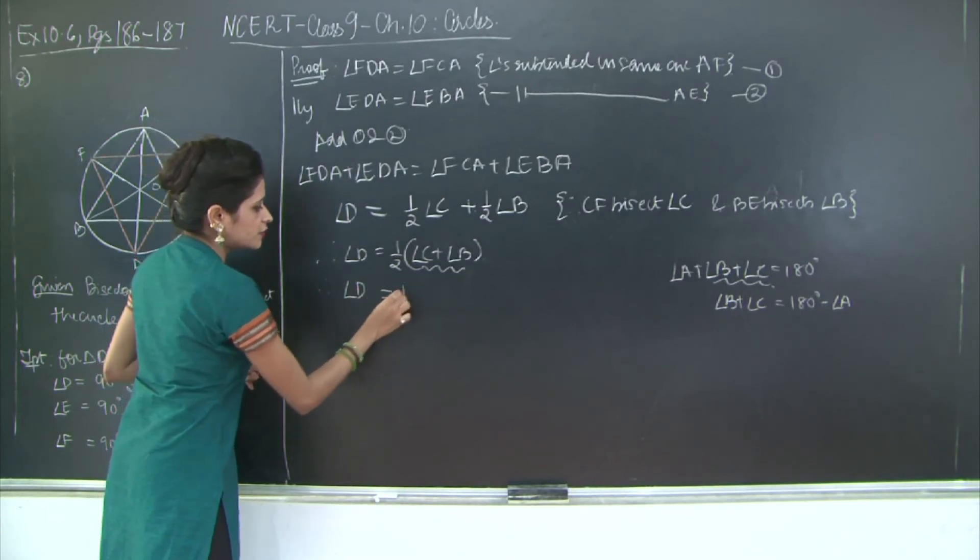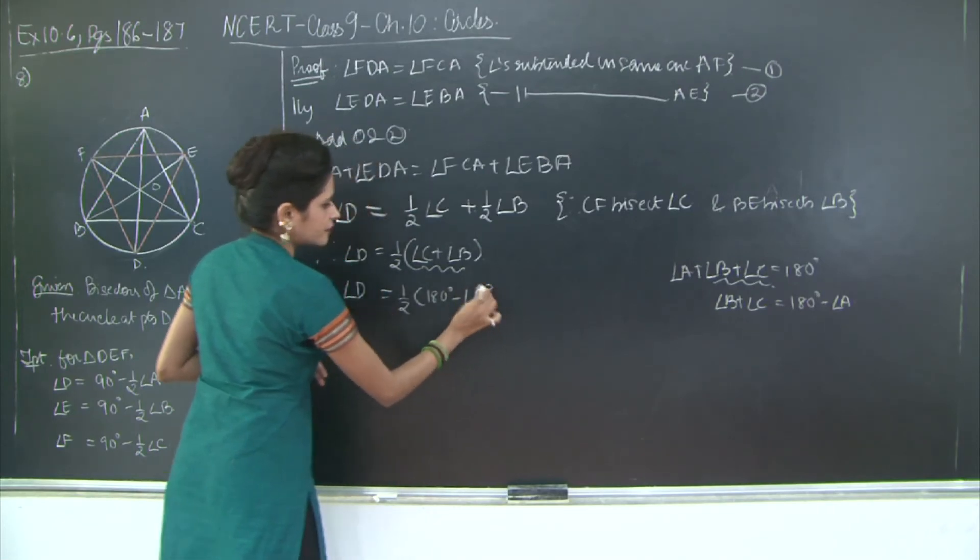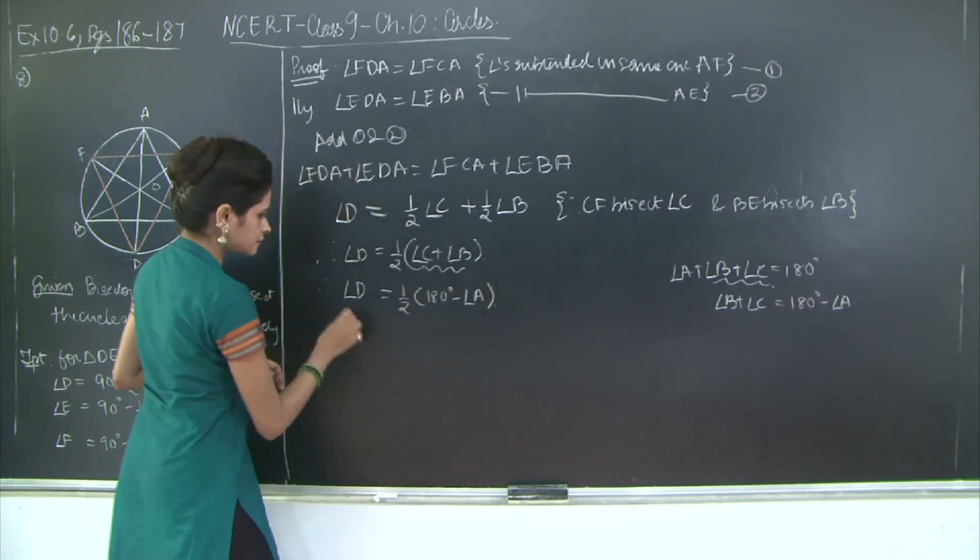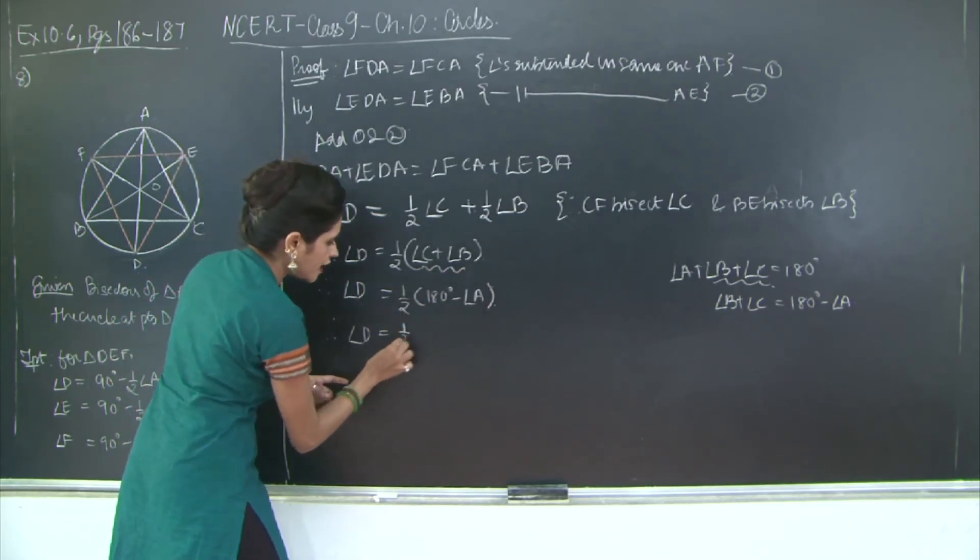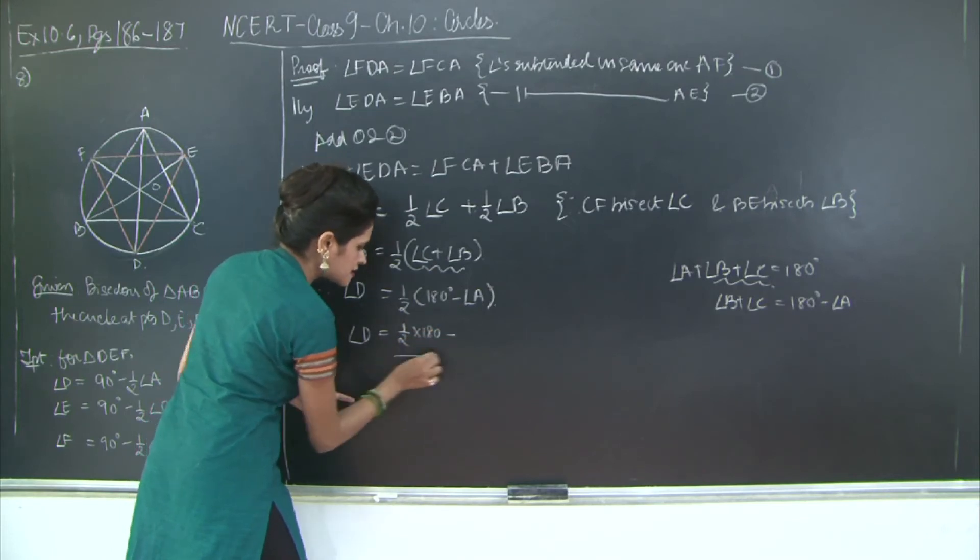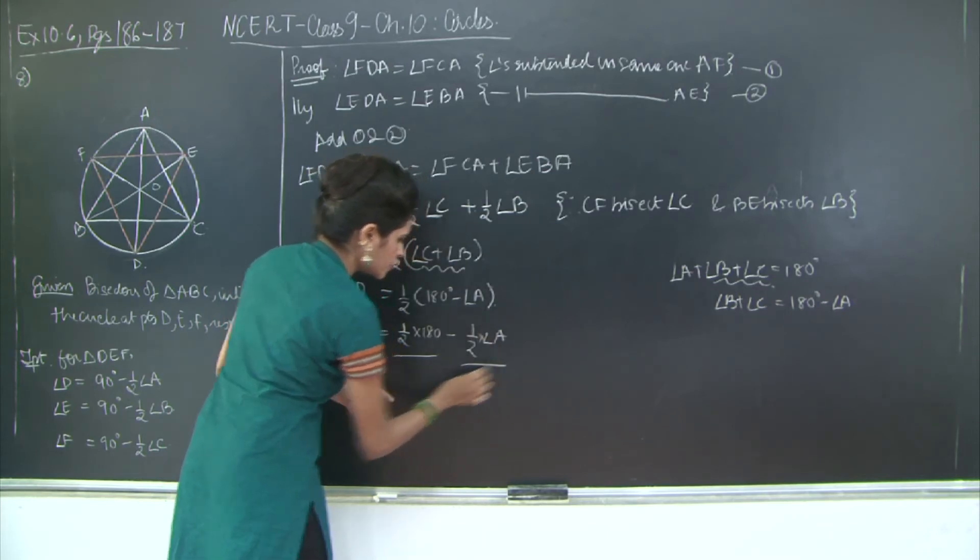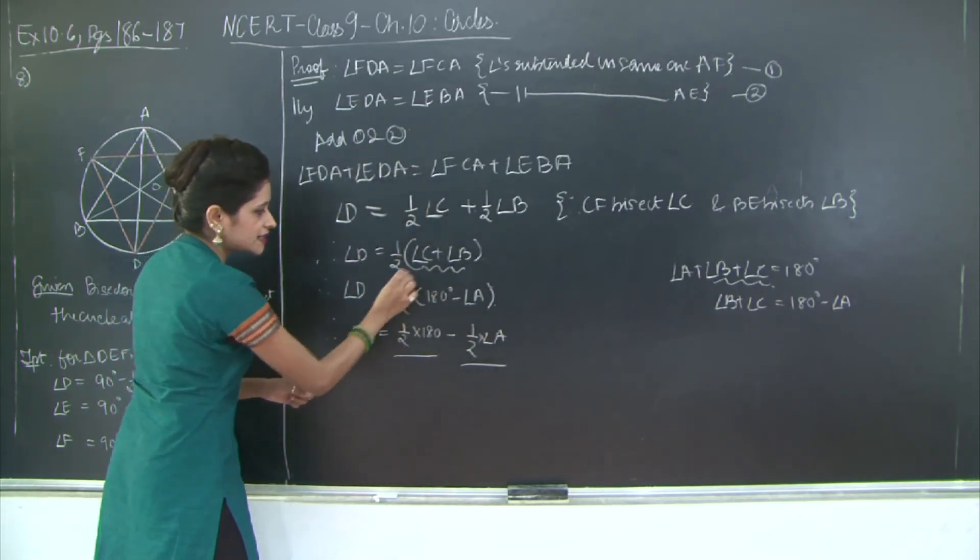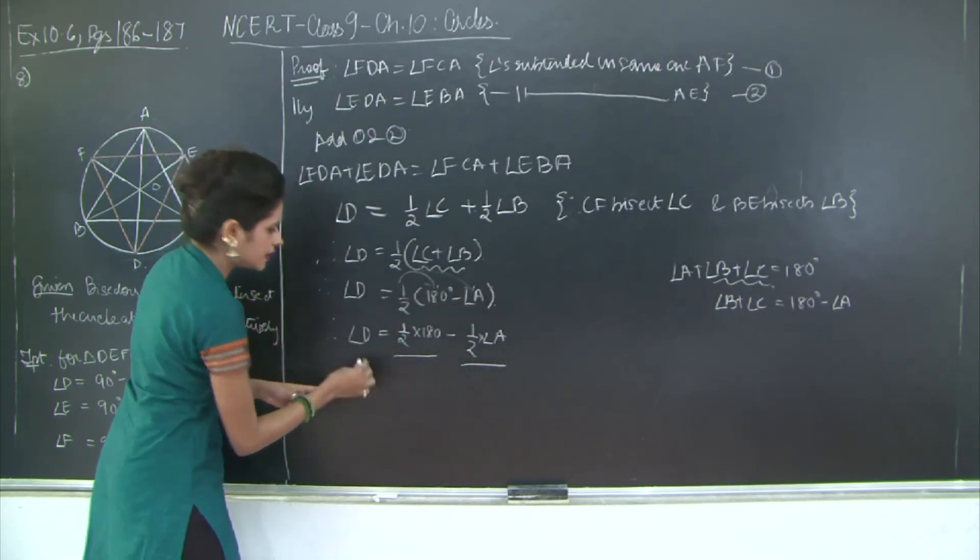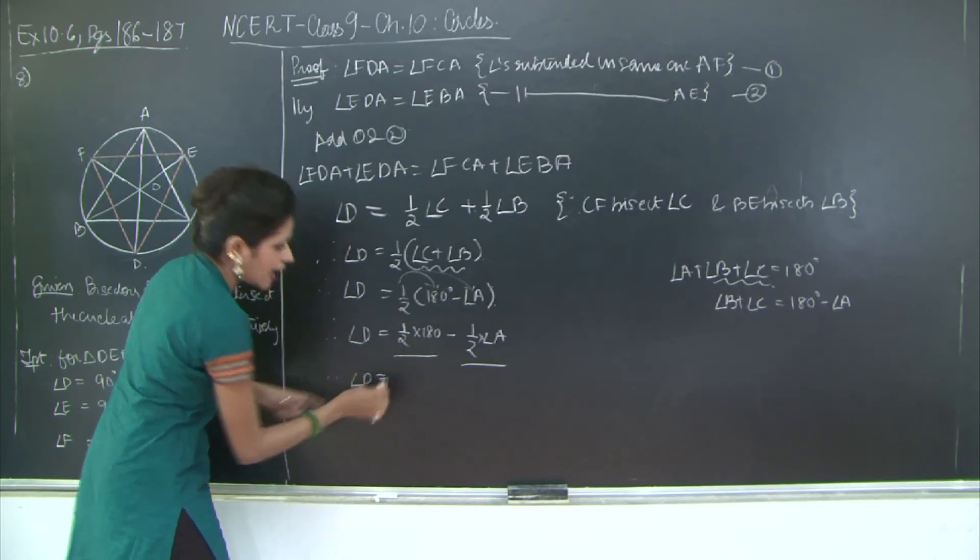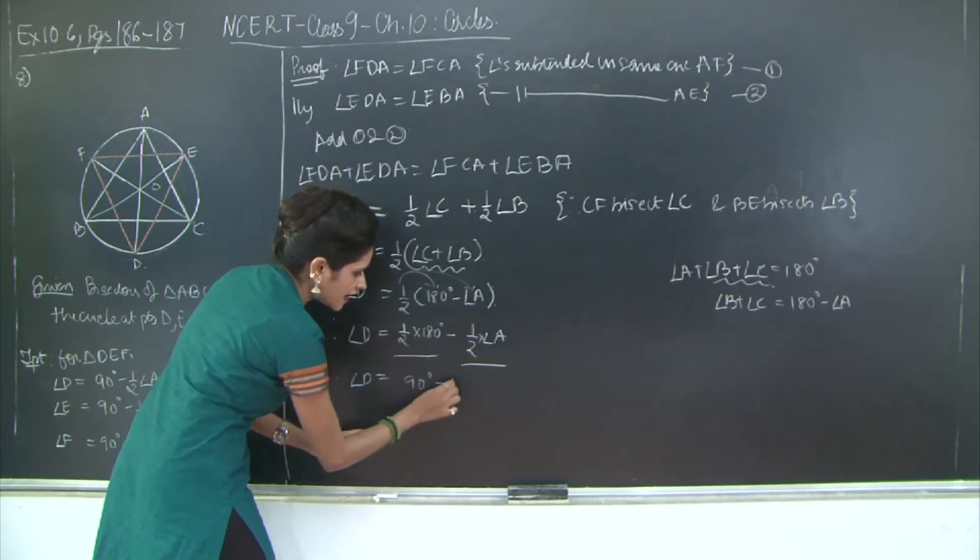So I will say therefore angle D is equal to half of 180 degrees minus angle A. So when I open the bracket, I multiplied half of 180, this is the first term, and I even multiplied it with angle A. So this will be therefore angle D, half of 180 degrees we know that is 90 degrees minus half angle A.